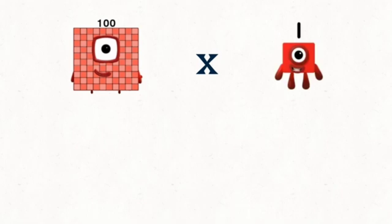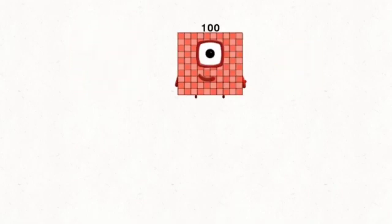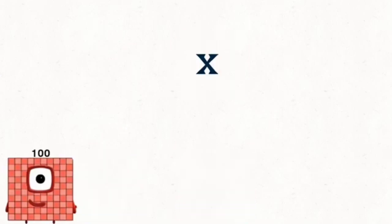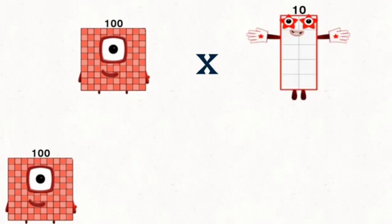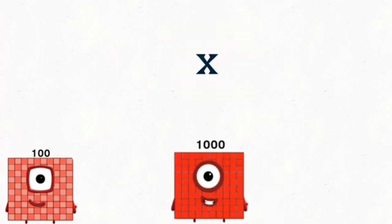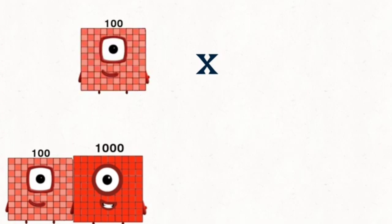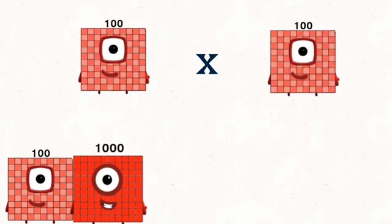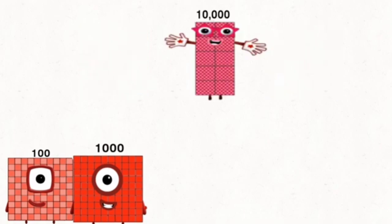100 times 1 equals 100. 100 times 10 equals 1,000. 100 times 100 equals 10,000.